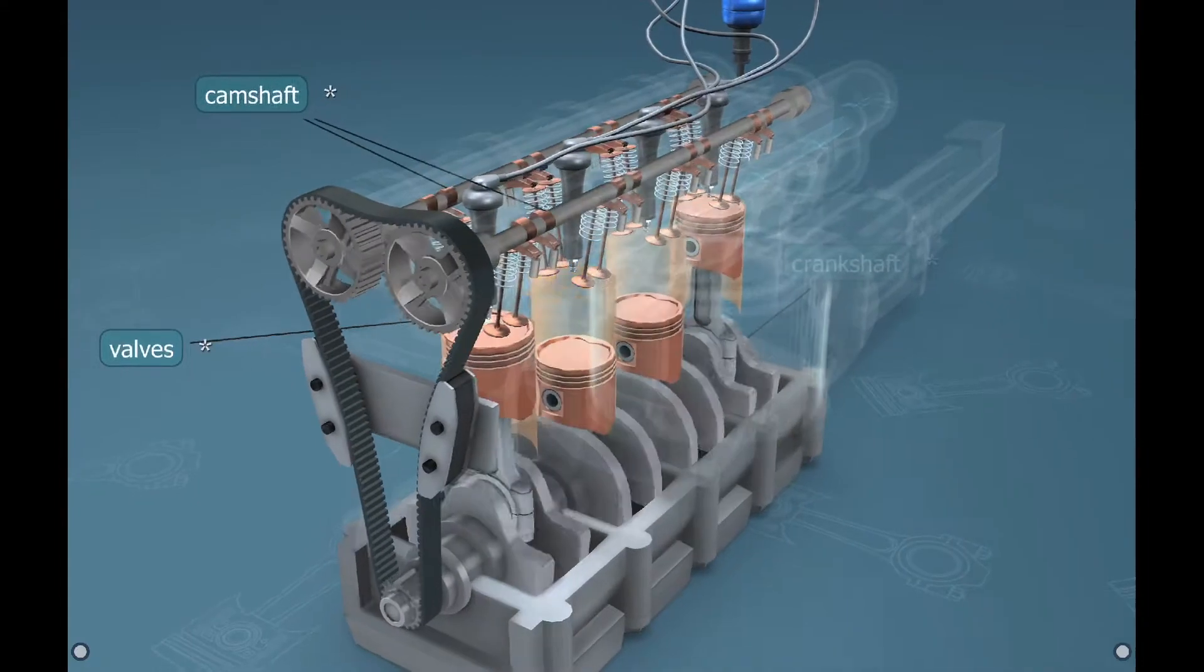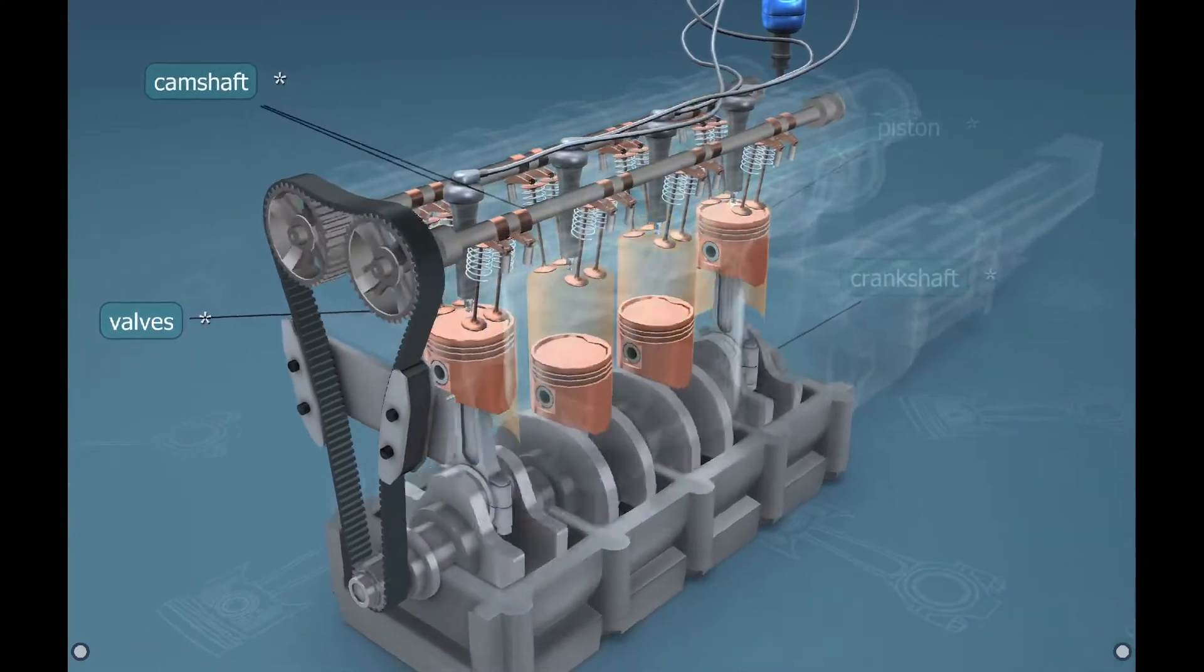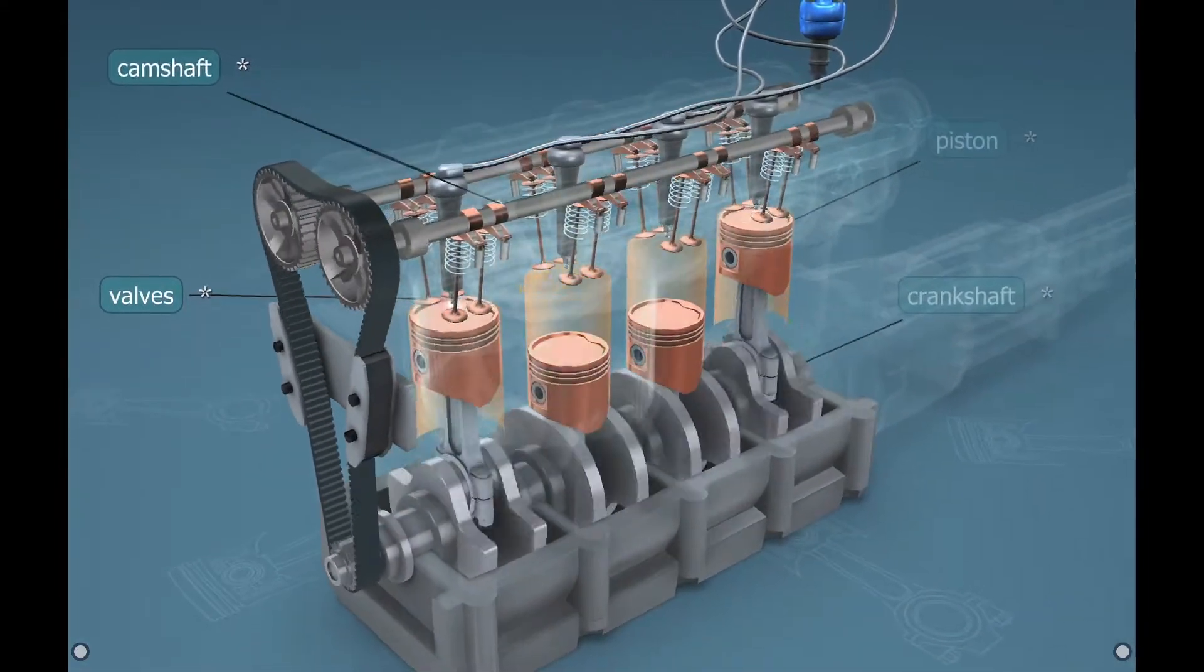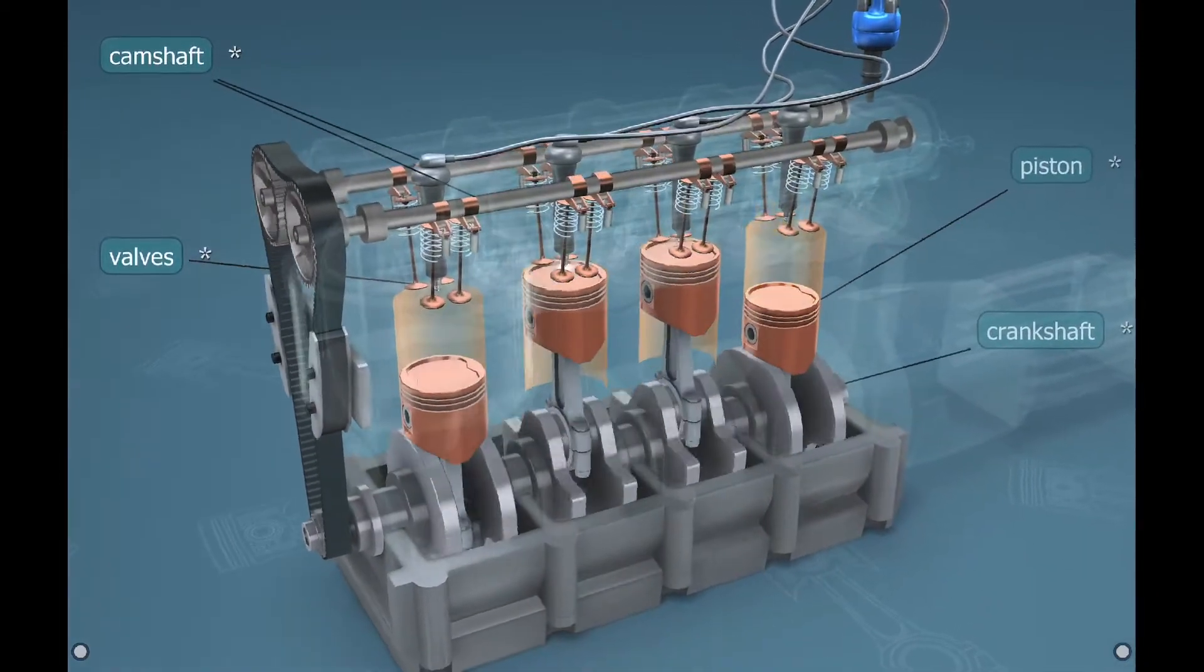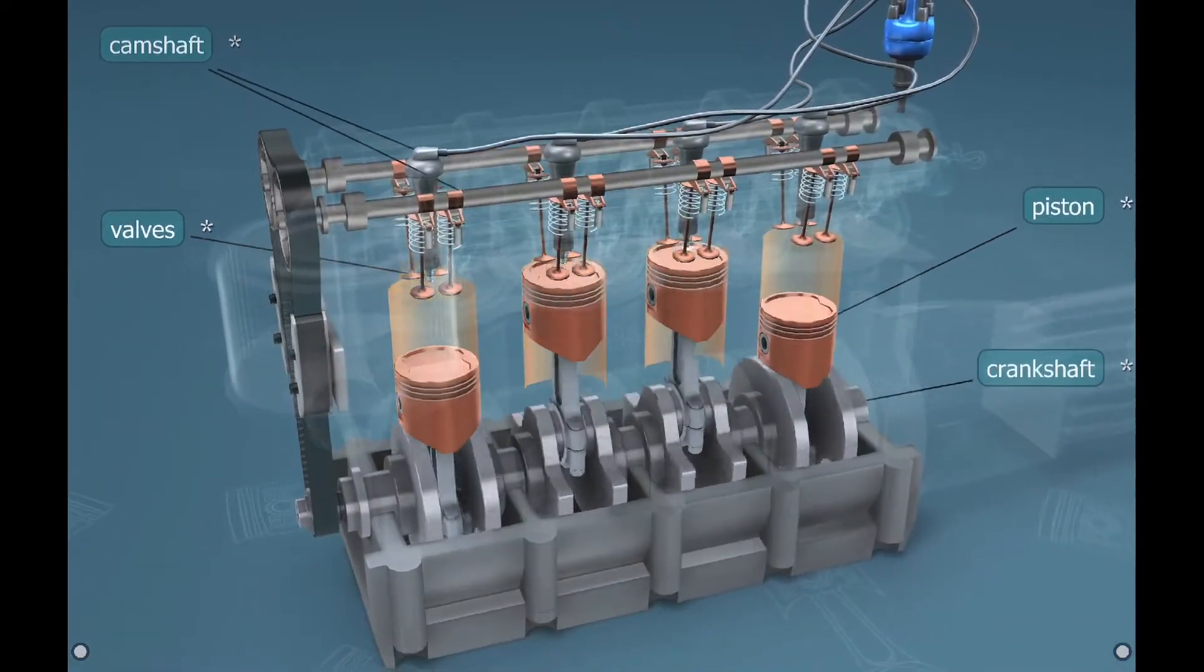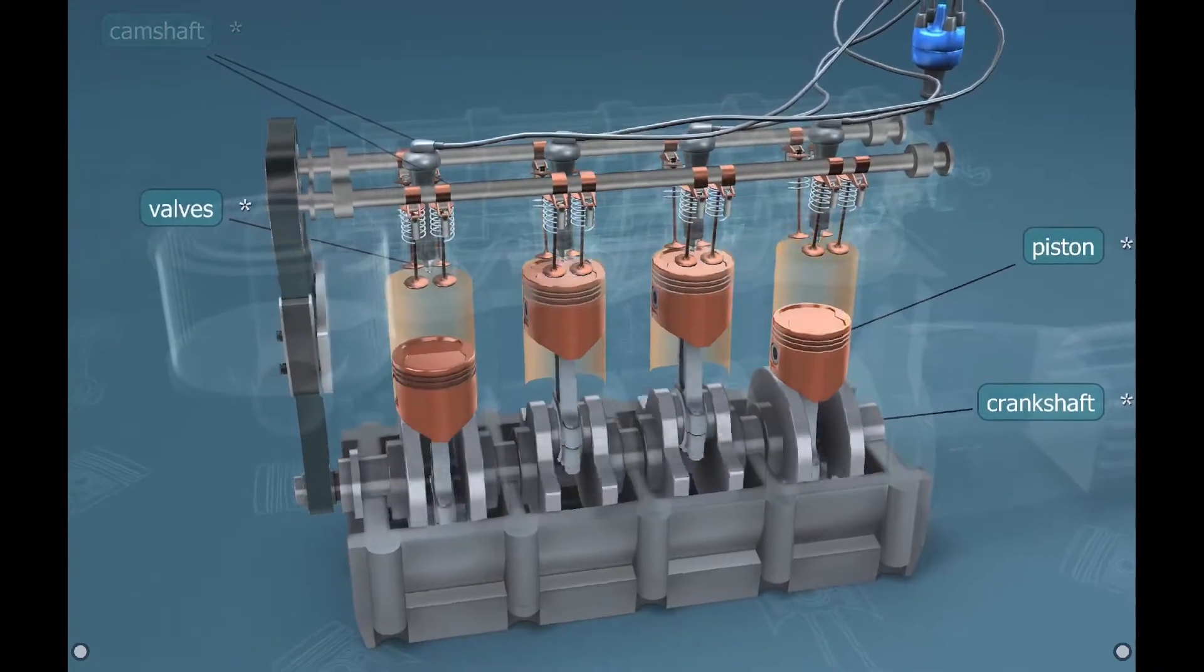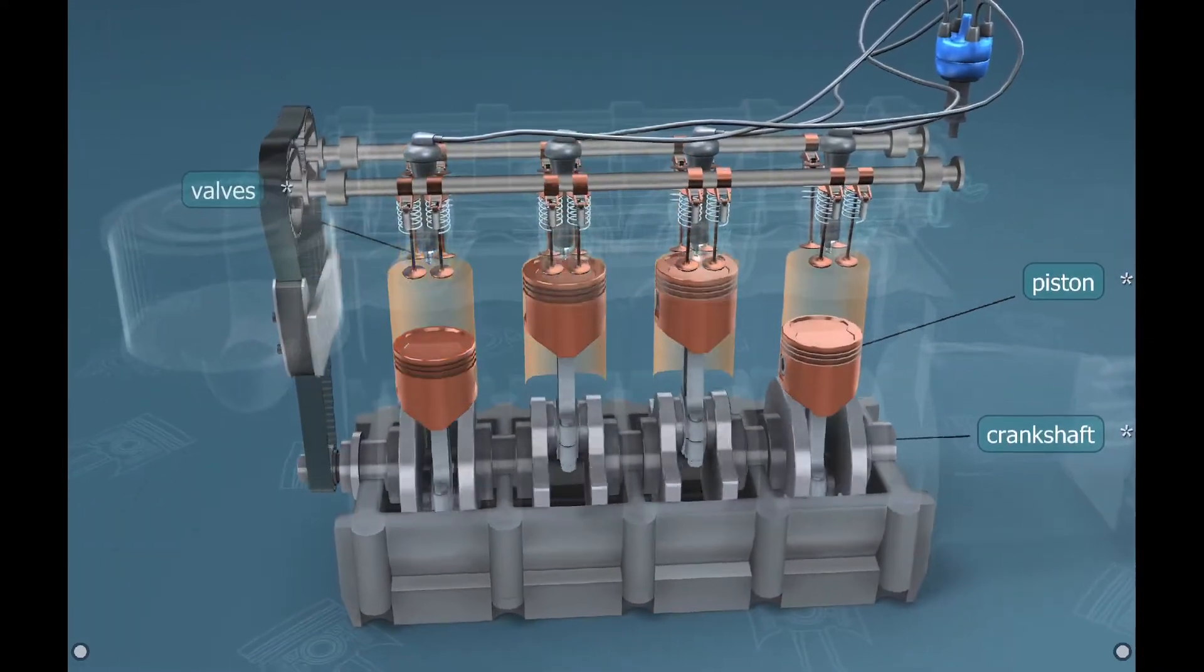In broad terms, fuel with the higher octane rating are used in higher compression gasoline engines, which may yield higher power. Such higher power comes from the fuel's higher compression by engine and not directly from the gasoline.